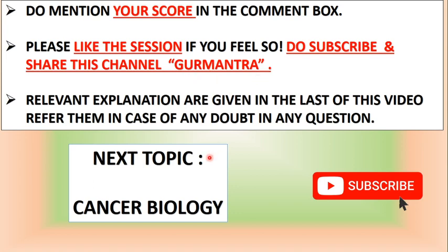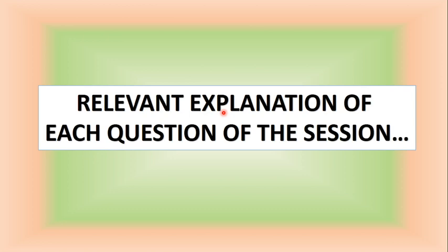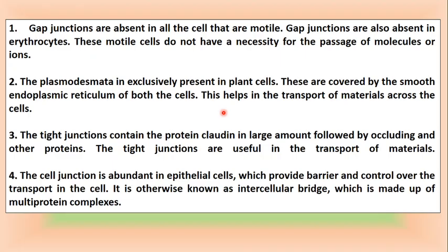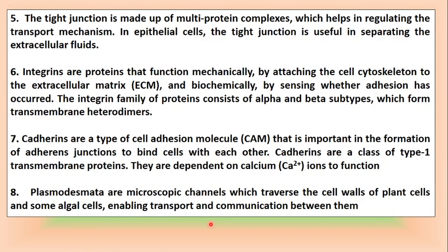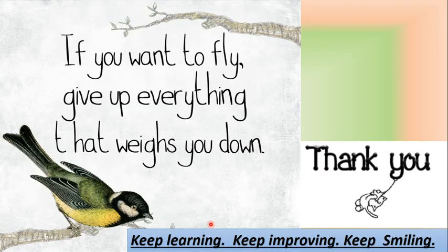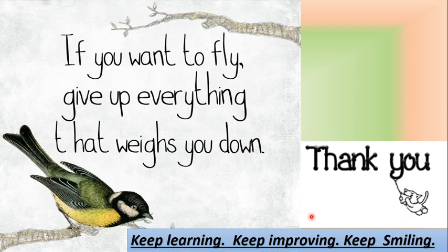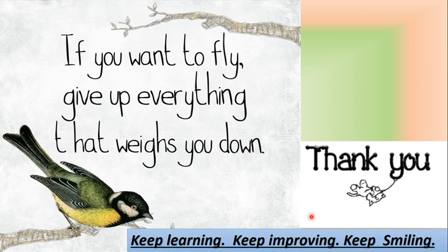Next topic for practice will be Cancer Biology. Now let's move on to relevant explanations. Here are relevant explanations of each question of the session. If you consider Unit 4 — cell communication and signaling from CSIR syllabus — cell junctions, cell adherence, proteins are important topics. Keep learning, keep improving, and keep smiling. Stay safe. See you soon in the next session. Till then, take very good care of yourself. Bye.